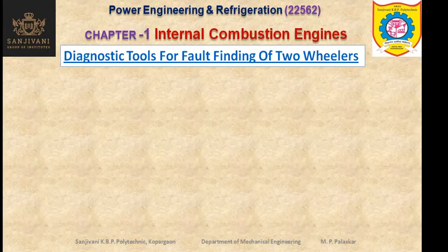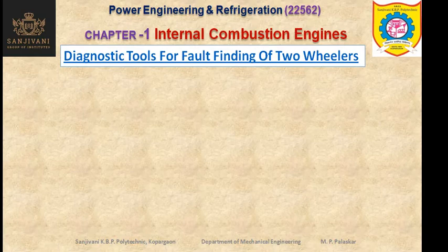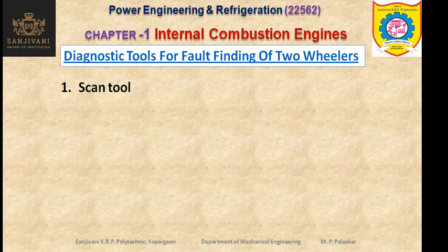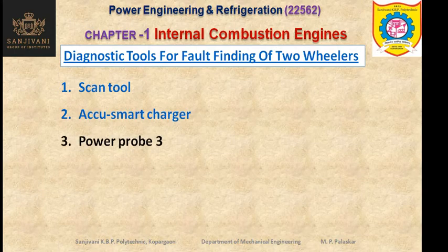Now let us study the diagnostic tools for fault finding of two-wheelers — which tools we are using for finding out faults in two-wheelers. Nowadays, in this advanced technology era, most of the problems are electronics-based because the system consists of so many electronic components and controls. So these fault-finding equipments are also electronic based. The tools are: the scan tool, the AccuSmart charger, Power Probe 3, multimeters, flue gas analyzer, and battery tester. Most of these tools are electrical or electronic based.